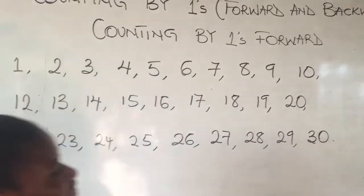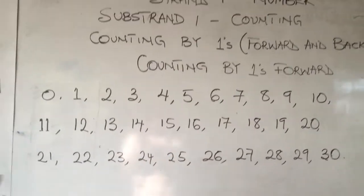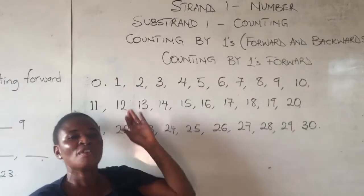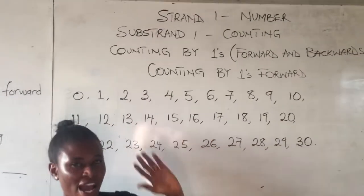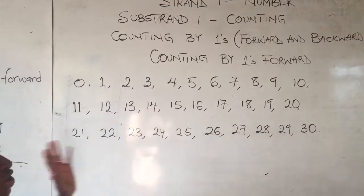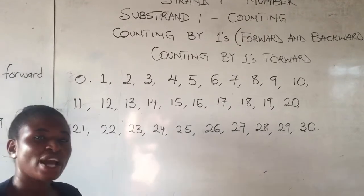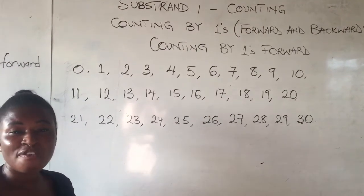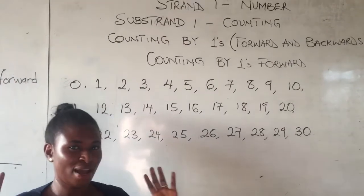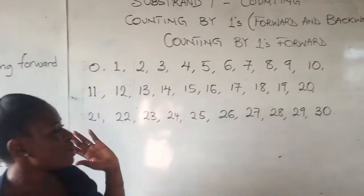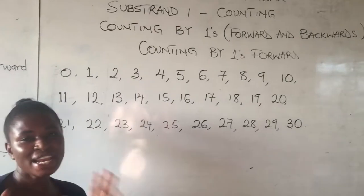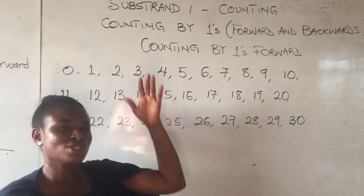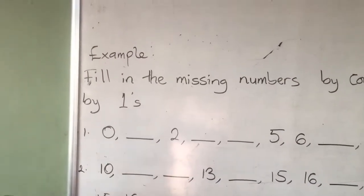So you continue for me. From 30, we go towards 31, 32, 33, and it continues forward towards 100. Now, when you are counting forward and you are given an exercise, you can be given an exercise to start counting from any number. So remember, when you are being asked to count forward from any number, you just continue from where you've been asked to start from. So let's look at this example.